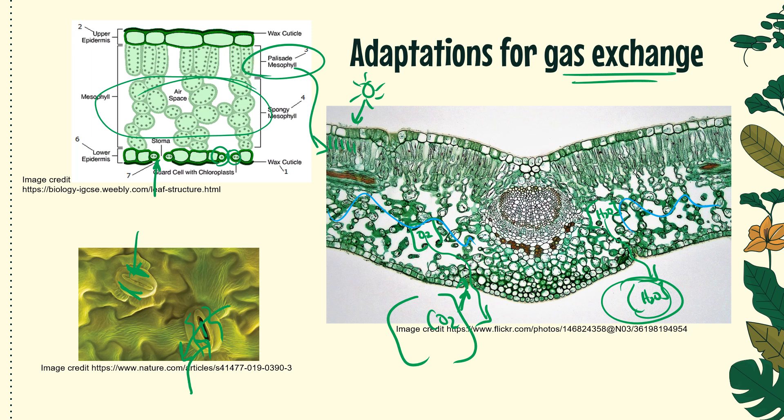At the very top surface of the leaf is the upper epidermis — like the skin of the leaf — whose job is protection. Covering the upper epidermis is the waxy cuticle. Plants that live in drier, warmer environments have thicker cuticle layers, while plants in very humid environments don't need as much wax.